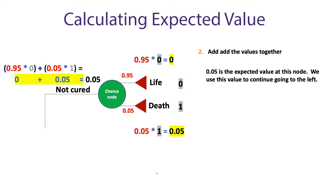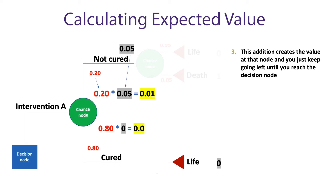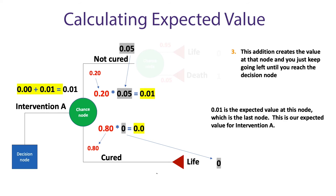We use this value to continue moving to the left. Now we look at the next node and calculate its expected value the same way. We multiply the probability of the top branch times the value of that node and get .01 — you can see where the .02 and the .05 come from. We do the same for the bottom branch and get zero — you can see where the .98 and the zero come from. Adding those two values together gives us .01, which is the expected value at this node.